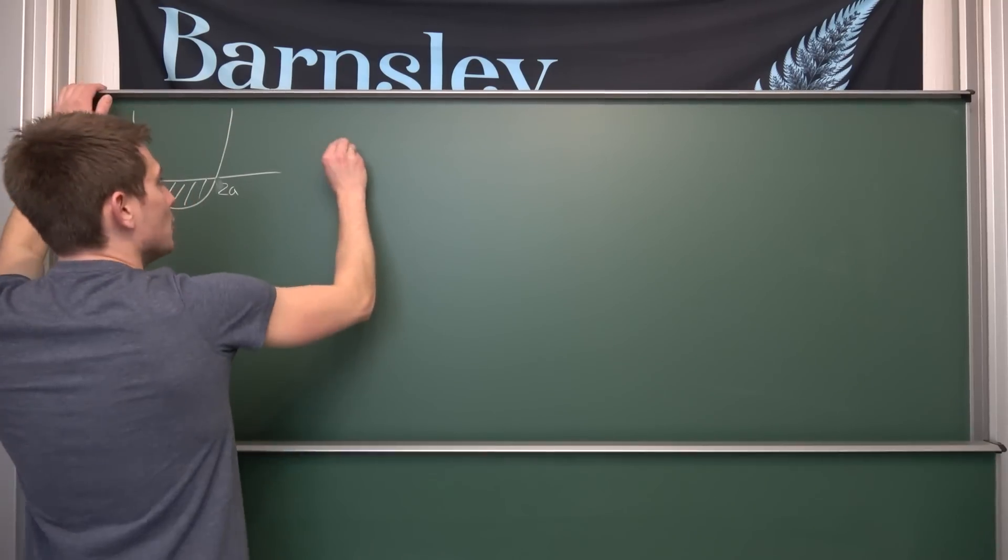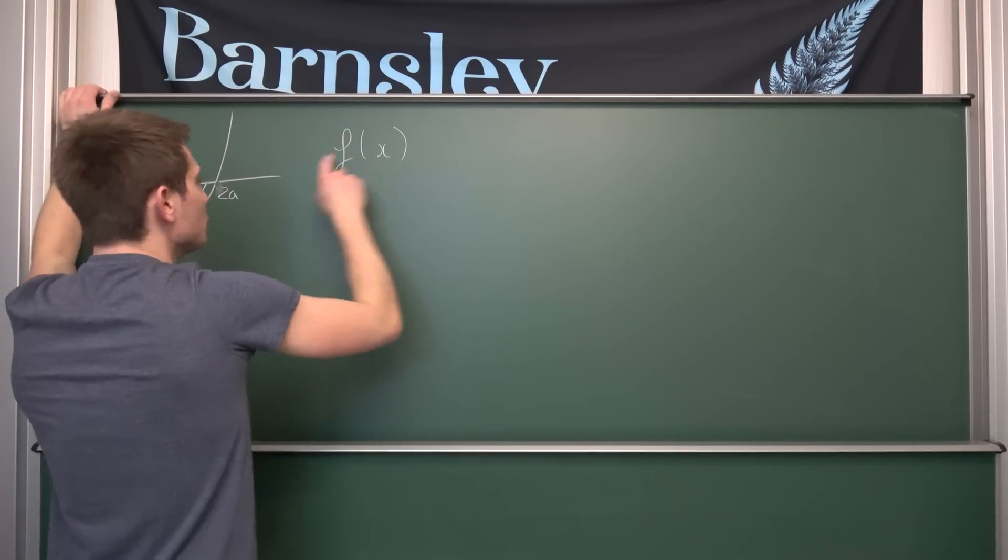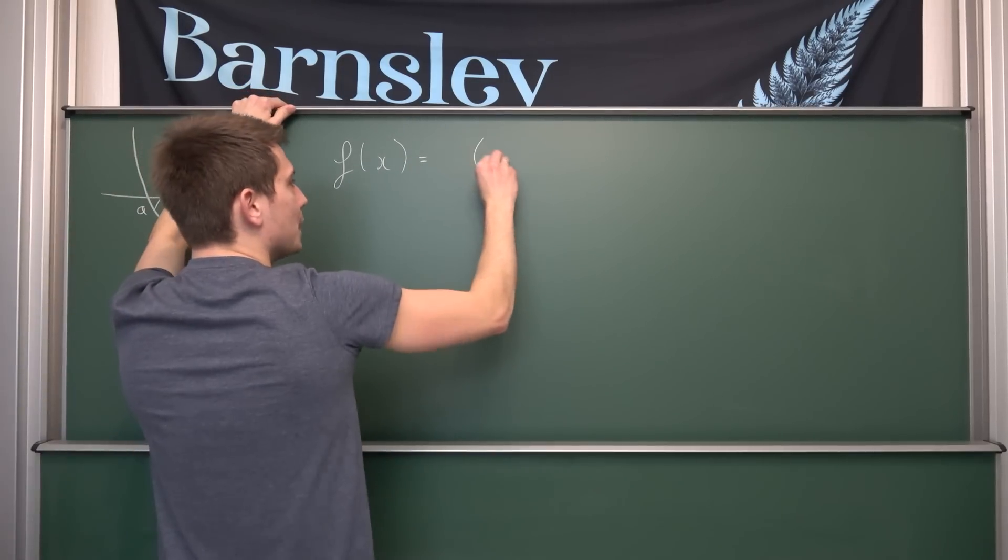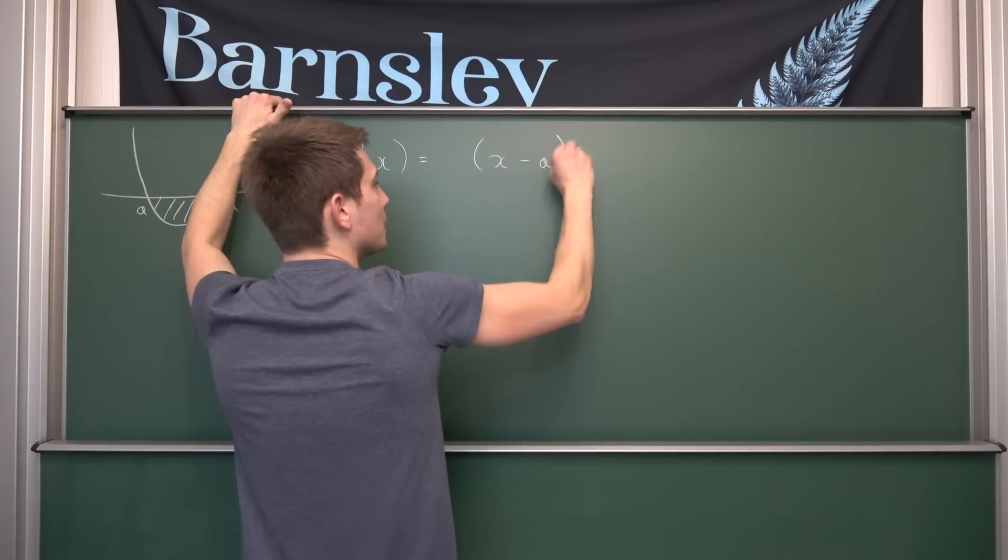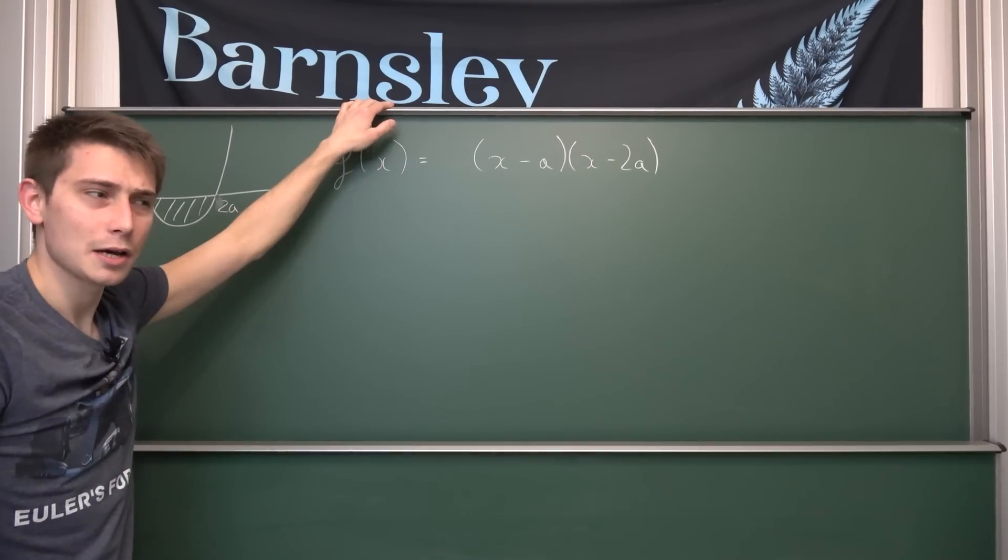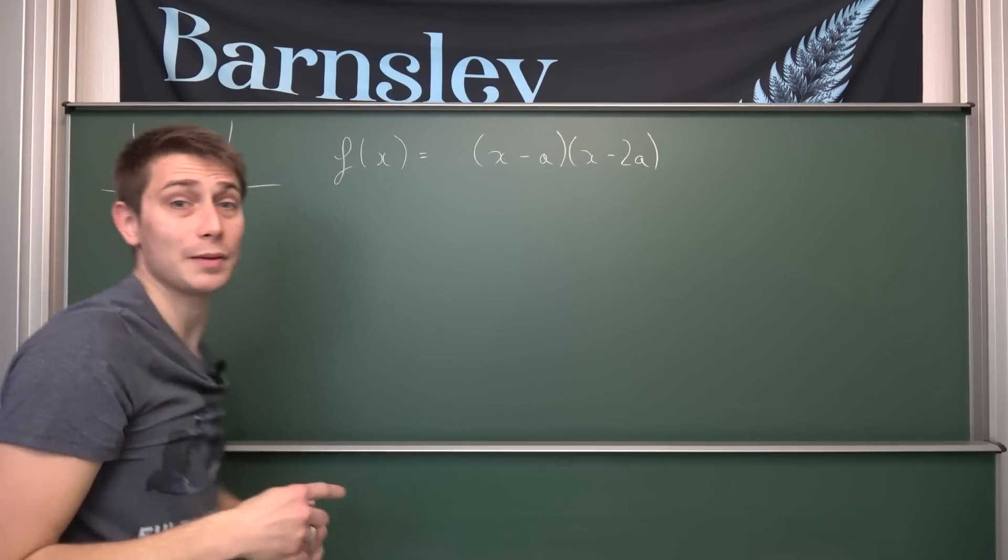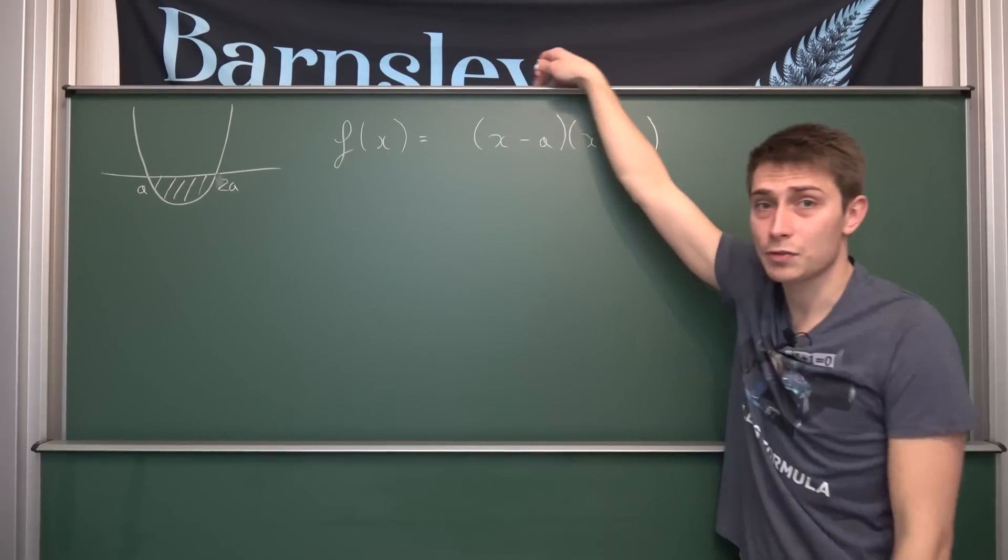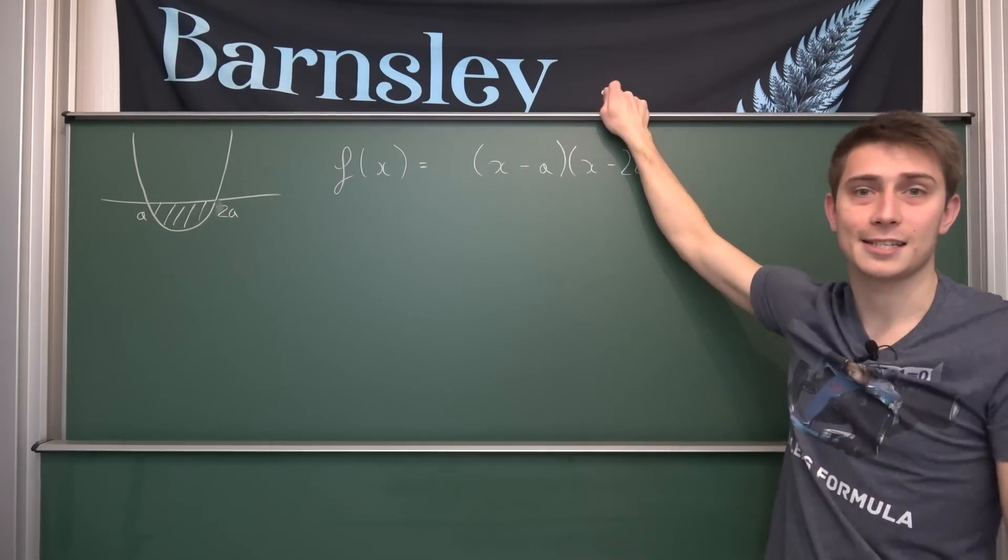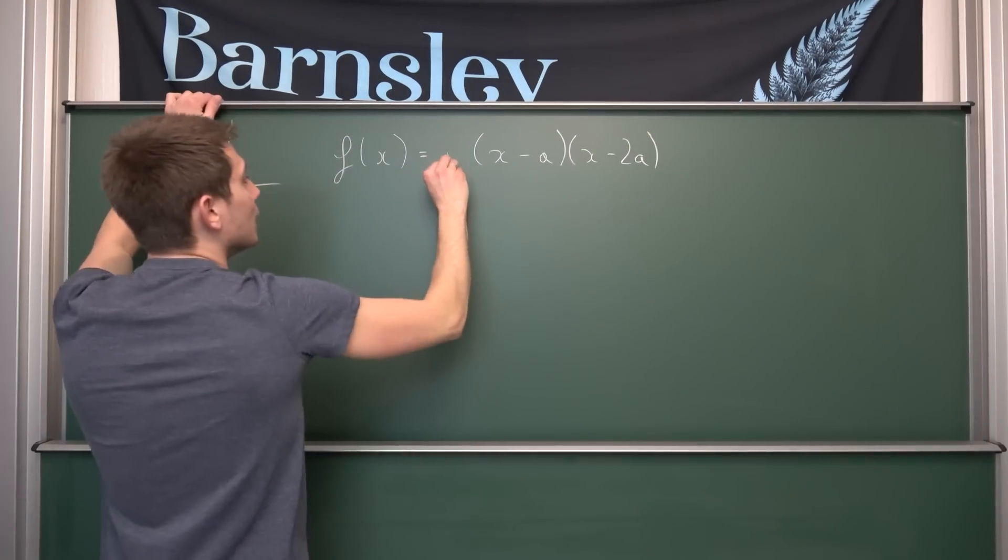Now it becomes even easier because we can formulate what our function for this parabola actually is. We can turn this into its factorized form, namely x minus the first root times x minus the second root. We don't know if this parabola is actually a parent function, meaning with a scaling factor of 1. We have to take into account that there's a scaling factor in this problem.